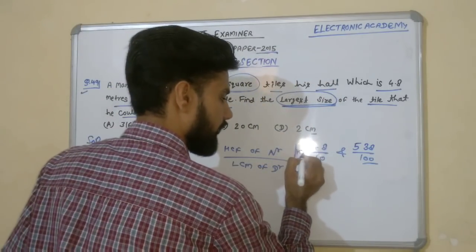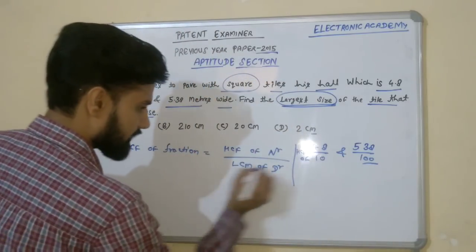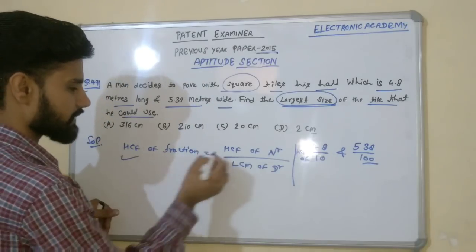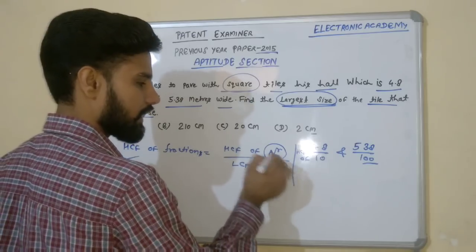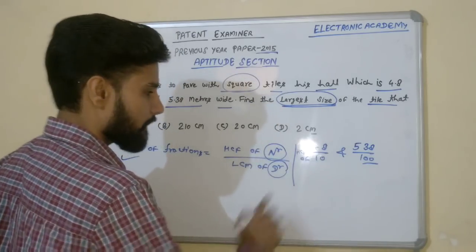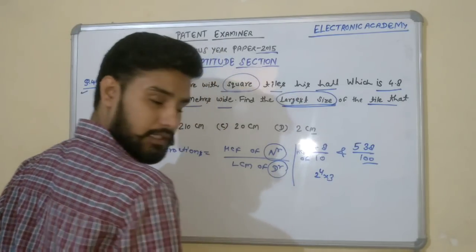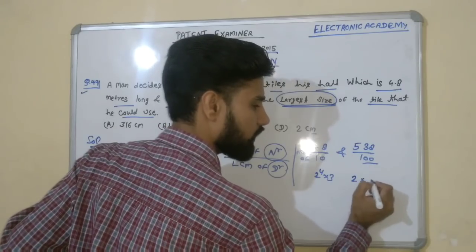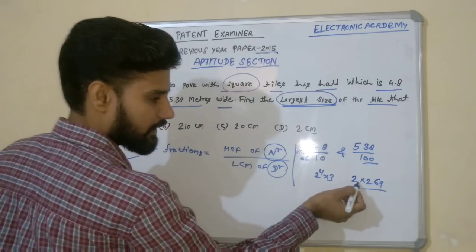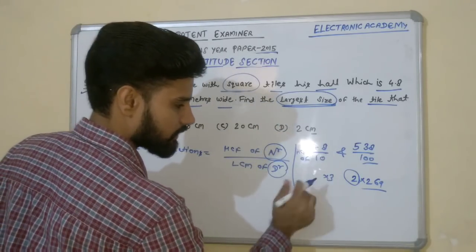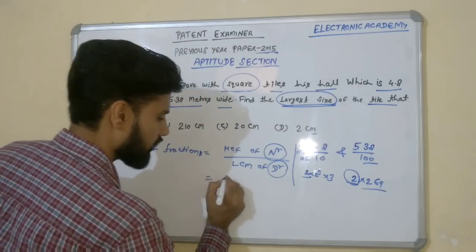So I am taking HCF of 48 and 538. We are talking about the numerator and denominator. The numerator is 48 and 538. When we take 48, it factors as 2 to the power 4 into 3. And 538 is 2 into 269. The common part is only 2, so the HCF of the numerator part is 2.